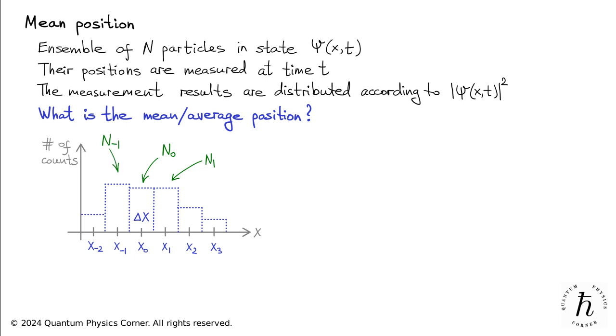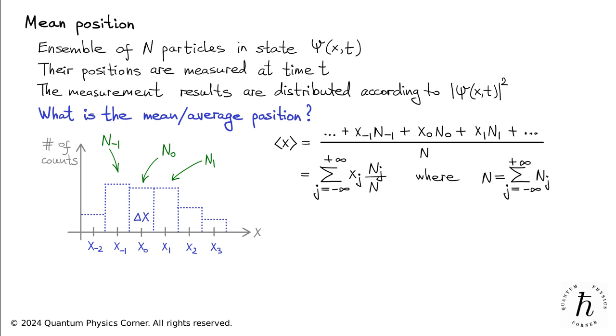The mean outcome, denoted by x within angular brackets, is the arithmetic average of all individual outcomes. It's obtained by summing all outcomes multiplied by the corresponding counts and dividing by the total number of measurements. Alternatively, this can be expressed as the sum of all possible outcomes x sub j multiplied by their frequencies n sub j over N, where N is the sum of all n sub j's.